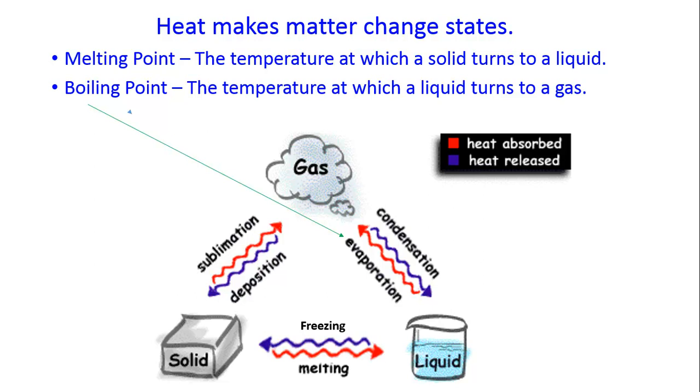Changing states of matter. When heat goes into an element or a compound, it can change its state of matter. Well, when heat goes out, it will change its state of matter. So we call this energy in and energy out.